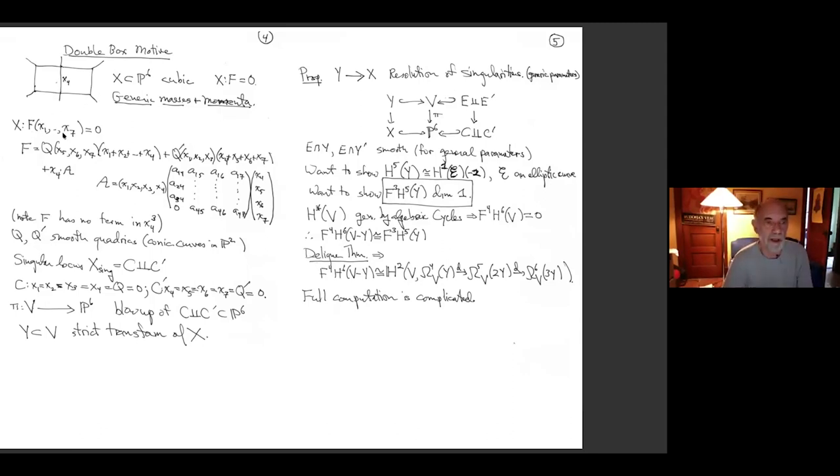If you do that, the hypersurface is defined by a cubic in the seven edges, one, two, three, four, five, six, seven, the seven edges. So it's a cubic in seven variables. And if you work it out, it has this shape. I have Q capital Q and capital Q prime are quadrics. They are degree two in three variables here. Q is in X5, X6, and X7, and I multiply it by the linear, just the sum of X1, X2, X3, X4. And then Q prime is another quadric and this time in X1, X2, X3, and I multiply it by the others. And then I add a sort of catch all term, which is divisible by X4.